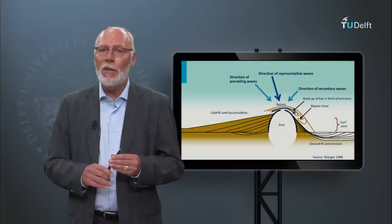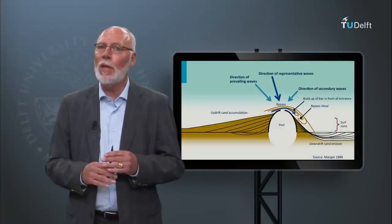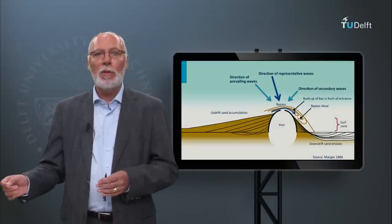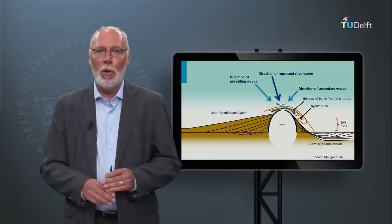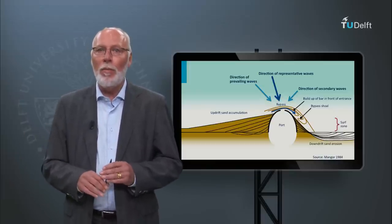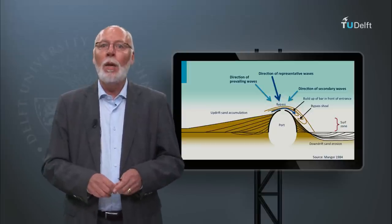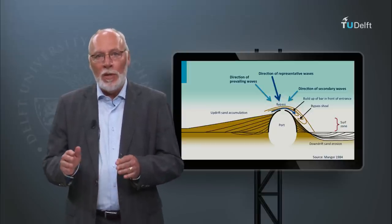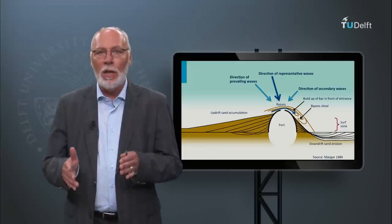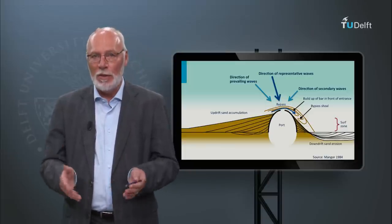In other cases, like the harbour moles of the Dutch harbours of Rotterdam and Amsterdam, the downstream site is nourished by extracting sediment from offshore. This is largely because the wave climate is not from one direction, so the transport is multidirectional and not that large, which makes artificial bypassing less effective and efficient.